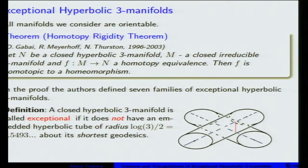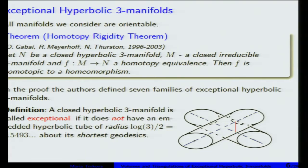Now let me define exceptional hyperbolic three-manifolds. First of all, we'll consider all manifolds that are orientable. David Gabai, Robert Meyerhoff, and Nathaniel Thurston proved the homotopy rigidity theorem. This theorem says that if we have a closed hyperbolic three-manifold and another manifold is a closed irreducible three-manifold, and there is a homotopy equivalence between them, then it's a homotopy to a homeomorphism. In the proof of this theorem, they defined seven families of exceptional hyperbolic three-manifolds.